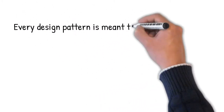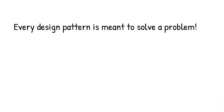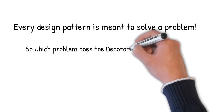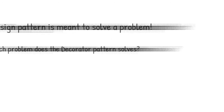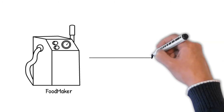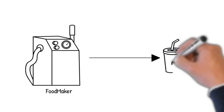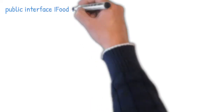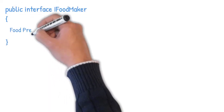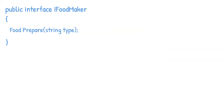Every design pattern is meant to solve a problem, so which problem does the decorator pattern solve? Consider a scenario where we want to build a food maker that, given a requirement, produces the appropriate food. When building it programmatically, we start by creating an interface — IFoodMaker — that has a method 'prepare', accepting type as an input and food as an output.